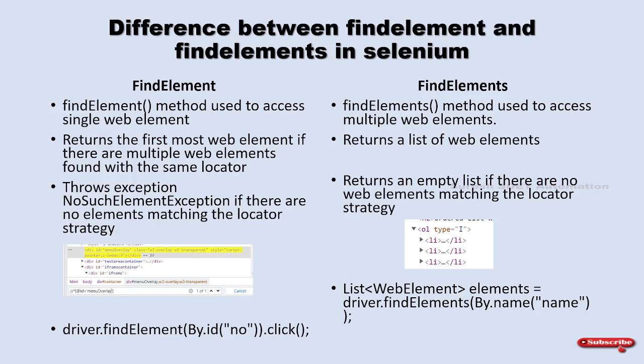You then iterate using a for loop or for-each loop and perform the action on each particular web element. Notice that no action is placed directly after findElements — because we need to iterate each list item first to perform actions accordingly. You cannot directly perform an action on findElements; it will throw an error. These are the major differences between findElement and findElements.